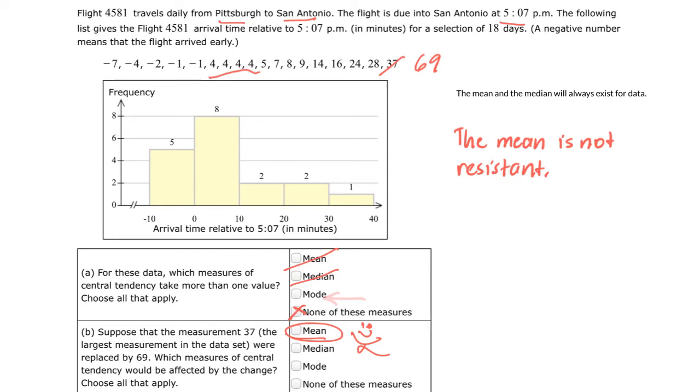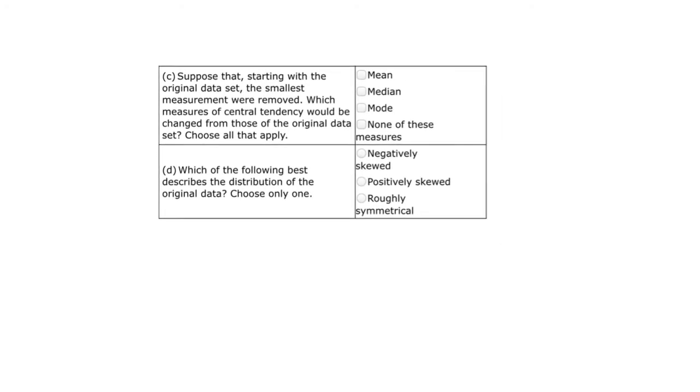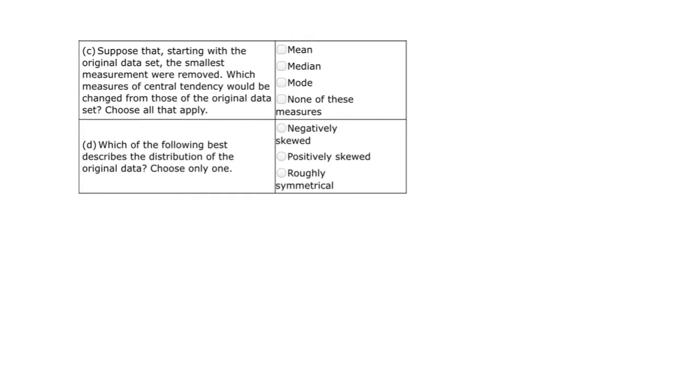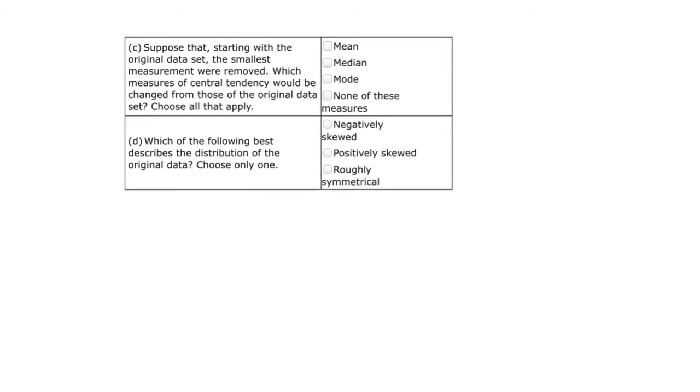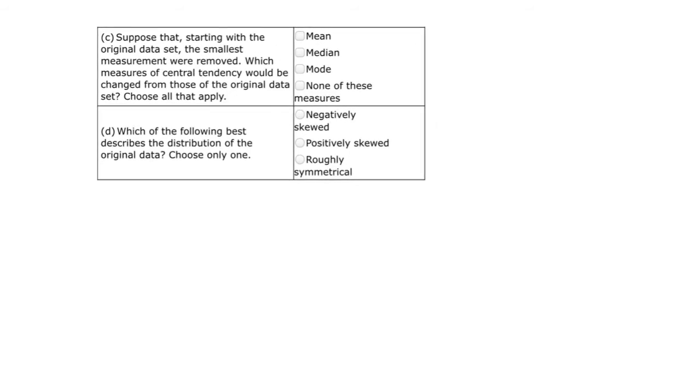So the mean in this particular case is the only one that's impacted when we replace. So let's go out and do the next two questions. So the second question says, suppose that starting with the original data set, the smallest measurement were removed, which measures of central tendency would be changed? So we know anytime you remove something or replace, we know that the mean is going to be impacted. So the mean will be impacted. Then we just have to check to see if the median and mode will be. Well, that 4 is not going to be impacted because we're replacing the smallest data set and the 4 wasn't the smallest.